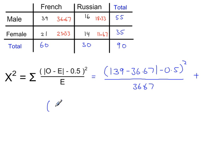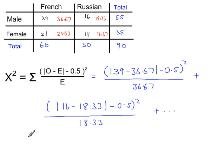Plus brackets. 16 minus 18.33 minus 0.5 squared. All over 18.33 plus dot dot dot. And then you can just write down what the answer is. Okay, this is our test statistic.